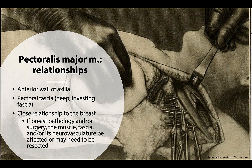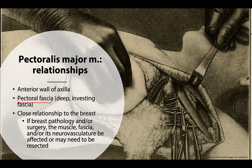Since this muscle is so large, it has a few important clinical relationships. It will form the anterior wall of the axilla — the armpit region. The investing deep fascia surrounding the muscle is called pectoral fascia. This muscle and its fascia are very closely associated with the breast, which is just anterior to the pectoralis major. So any breast pathology or surgery may affect this muscle, its fascia, or neurovasculature, or the muscle may need to be resected to access deeper structures.